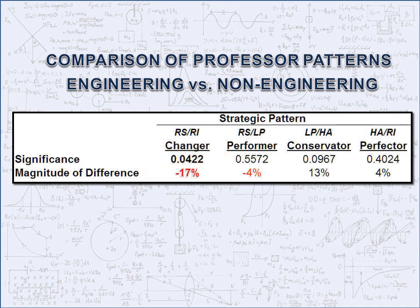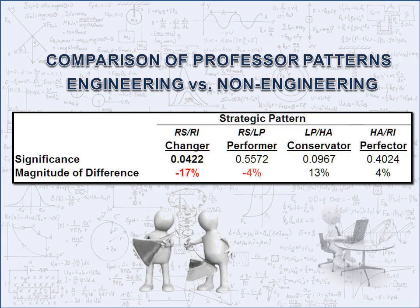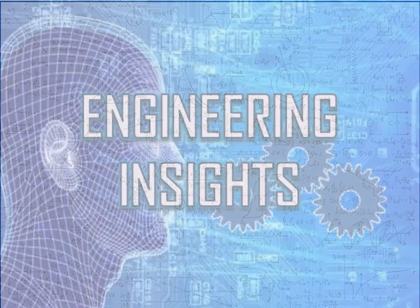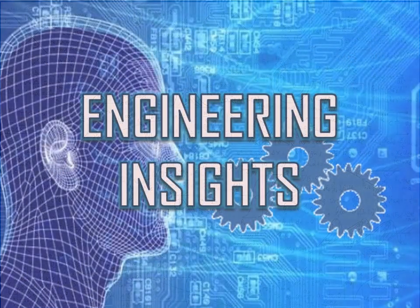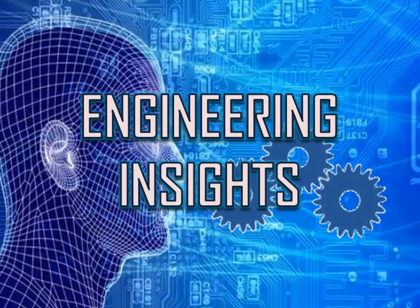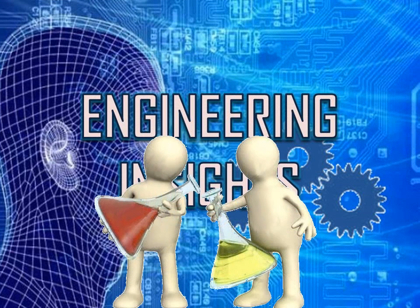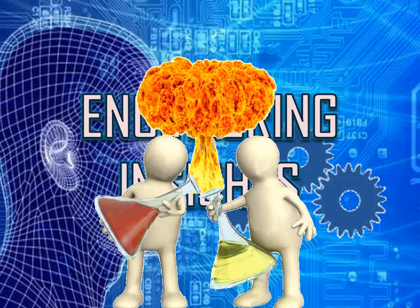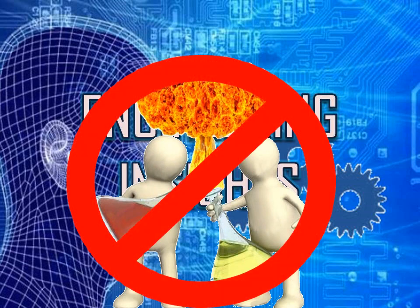The changer pattern favors experimentation rather than analysis. Earlier research has shown that engineering has a low failure tolerance. Experiments have a high failure rate, so engineering's lower changer pattern is no surprise.